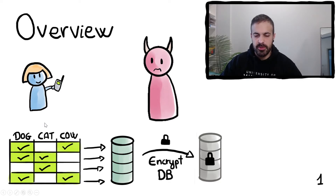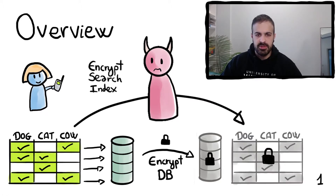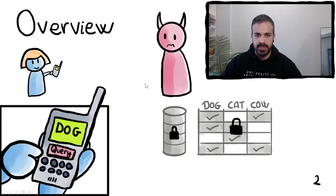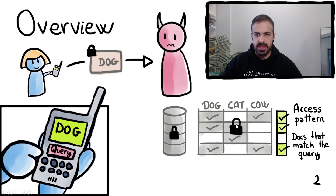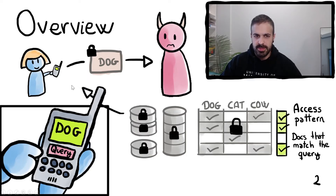However she also wants to be able to perform keyword queries in the data set. For this she can use a searchable symmetric encryption scheme to transform the search index into an encrypted search index and send it to the adversary. Then the query process works as follows: Alice would type the keyword dog in her phone and press the button query. This will generate a query token encrypting the word dog. The adversary does not see the underlying keyword but they can evaluate this query token in the encrypted search index. The result is the access pattern — the list of documents that match the query. The adversary sees that documents 1, 2 and 4 have matched this query, so they can return these documents encrypted to Alice.